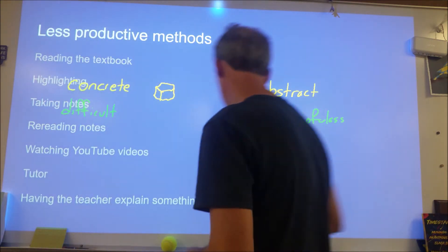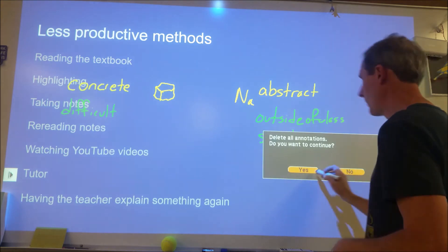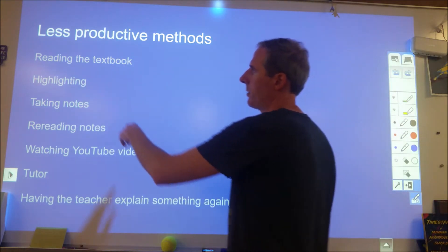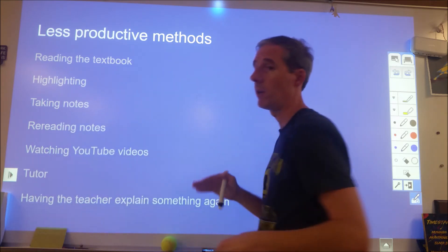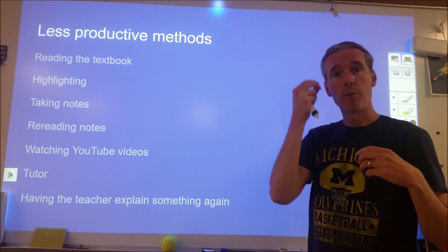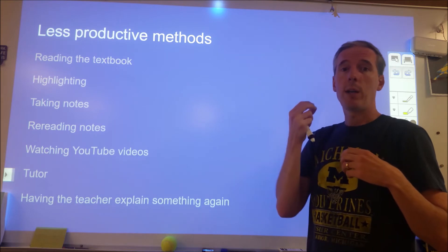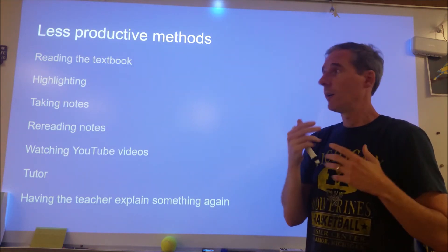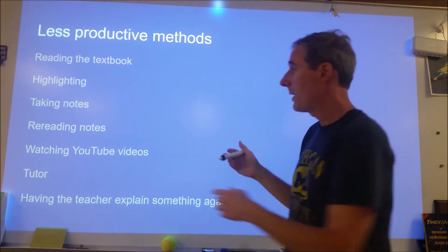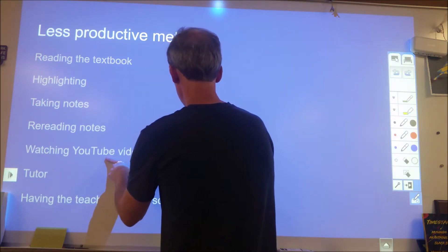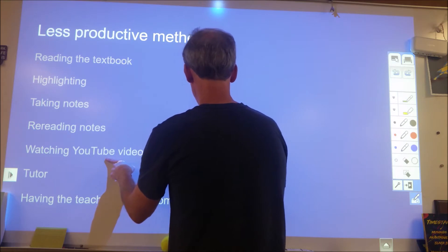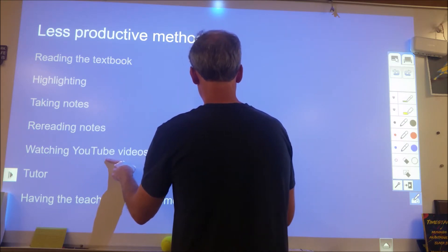So when we look at things that aren't productive, the first five or so on this list are all simple. Reading the textbook, highlighting, taking notes, rereading notes, and watching YouTube videos. Those are all limited engagement from you. And that means that your brain is less likely to change dramatically. And that's a problem, right? In fact, I'm going to link to a YouTube video on learning science for YouTube videos. And I understand the irony here, but here we are on YouTube.